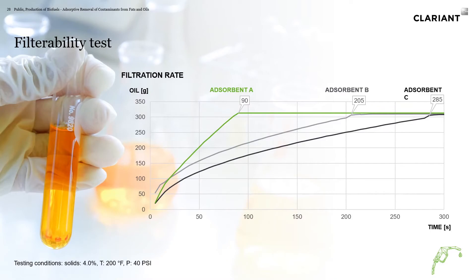Looking at filterability, that's another important aspect. We're able to control the porosity and particle size. Looking at this table, the x-axis shows the time it took to filter and the y-axis shows how much oil was filtered in that time. Adsorbent A was able to filter 300 grams of oil in about 80 seconds, whereas B and C took 200 and 300 seconds to filter that same oil. So filterability is another important aspect — since you're doing a filtration process, you want high throughput as well as contaminant removal.